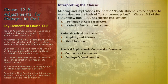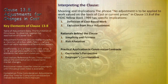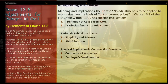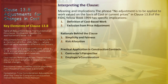Let's dive into understanding the phrase 'no adjustment is to be applied to work valued on the basis of cost or current prices' found in Clause 13.8 of the FIDIC Yellow Book 1999. This part of the contract involves work or components priced based on the actual costs incurred or the current market prices at the time of execution, typically encompassing labor, materials, equipment, and other direct expenses. Crucially, this clause stipulates that work valued on a cost basis is exempt from the price adjustment mechanisms in Clause 13.8, meaning changes in market conditions or cost indices won't influence the contract price for these components.